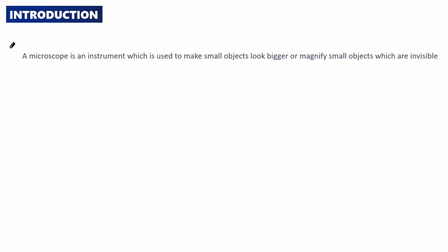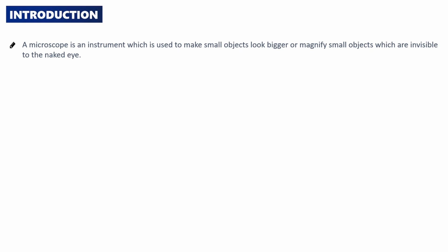Let's look at microscopes. A microscope is an instrument which is used to make small objects look bigger or magnify small objects which are invisible to the naked eye.